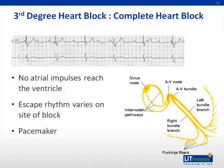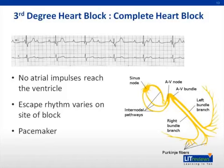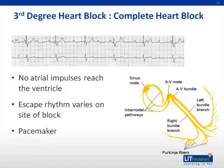As a general rule, the more distal the cell in the conduction system, the slower the depolarization rate and the slower the escape rhythm. The slower the escape rhythm, the more symptomatic the patient will be. The AV node has an escape rhythm of approximately 40 beats per minute, so in this EKG the complete heart block is likely at the level of the AV node. This also explains the need for pacemakers in Mobitz II: since the block is below the AV node, if Mobitz II progresses to complete heart block, the escape rhythm would likely be less than 40 beats per minute, making the patient very symptomatic.